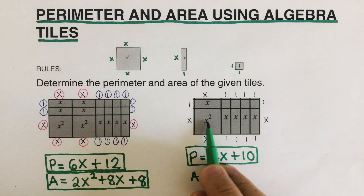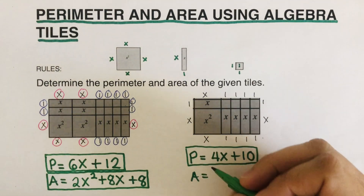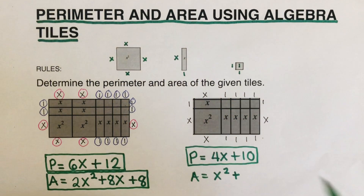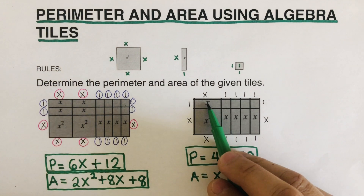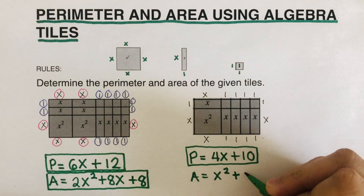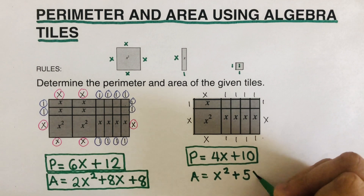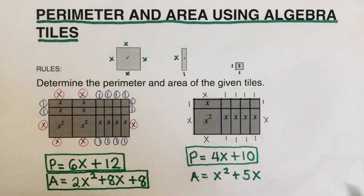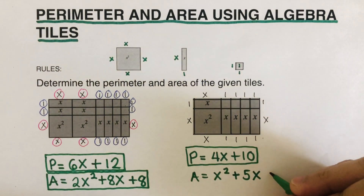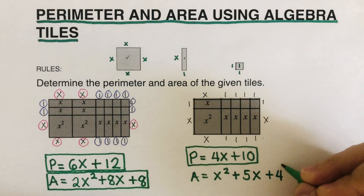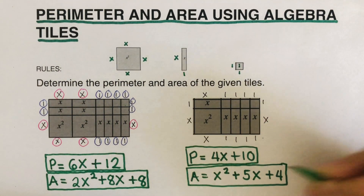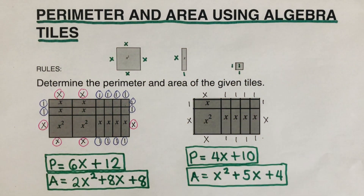Now let's find the area by combining like terms inside. There's only one x² tile, so write x². Count the x's: one, two, three, four, five — that's plus 5x. Count the ones: one, two, three, four — that's plus 4. So the area expression is x² + 5x + 4.